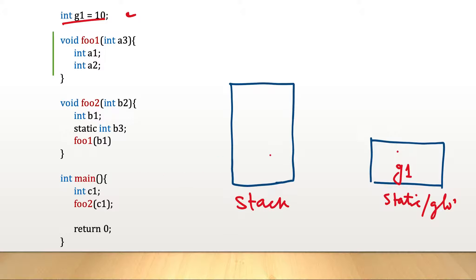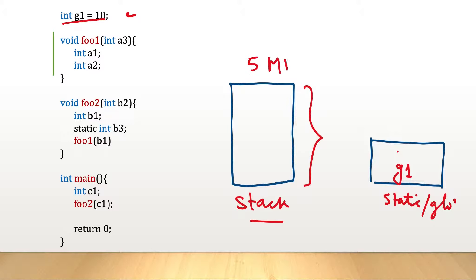The stack is allocated by the operating system when the application starts running, and its size will not change. This stack has some fixed memory — let's say 5 MB. When main starts running, main is pushed onto the stack because main has started executing. Main has variable c1, so c1 is also on the stack frame for main.